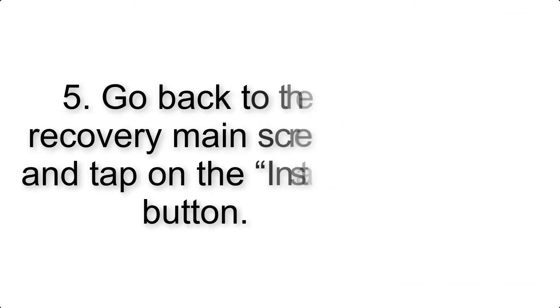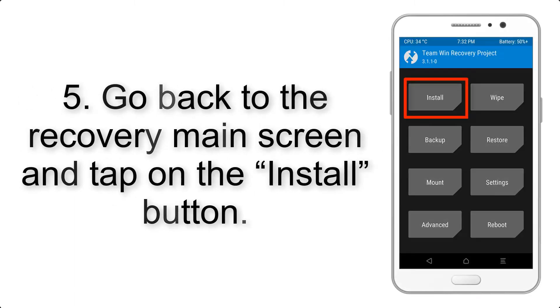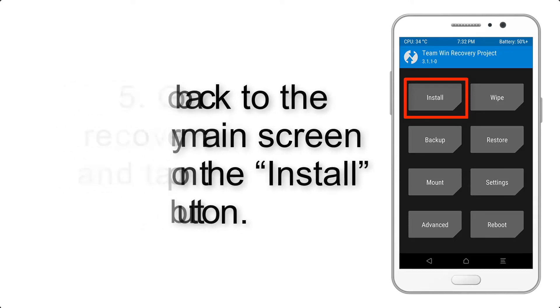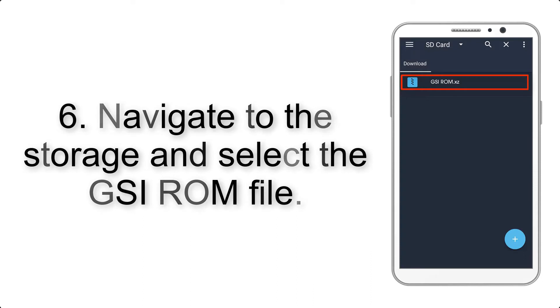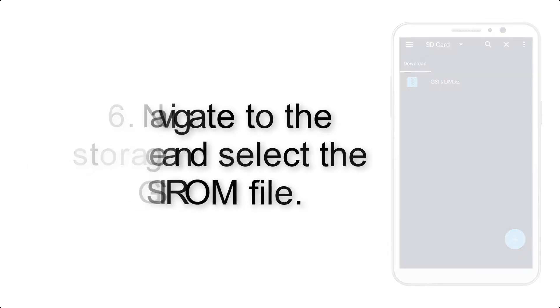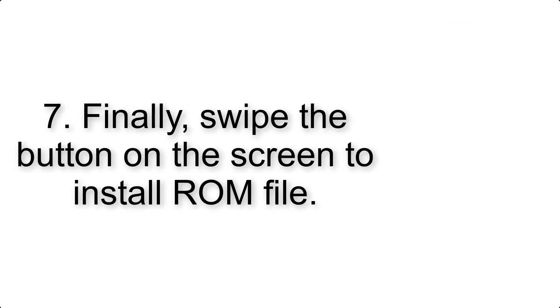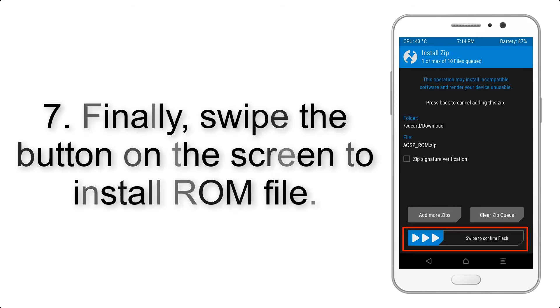Step 4: Swipe the button to wipe the device. Step 5: Go back to the recovery main screen and tap on the Install button. Step 6: Navigate to the storage and select the GSI ROM file.